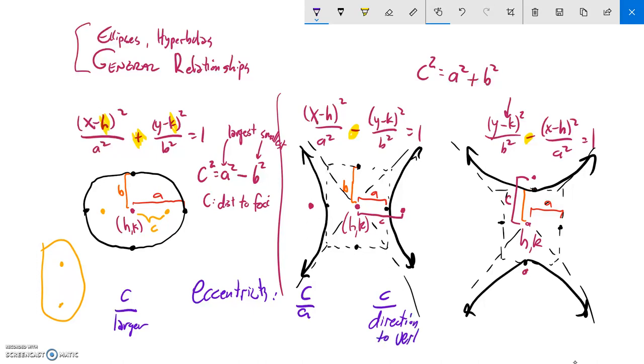And then, in a hyperbola, it's c over the direction to the vertex. So in this case, it would be c over this value. But in this one, it'd be c over this value, which we were calling b, but it's kind of arbitrary. So it's c over the direction that it's going. All right, so that's the general relation.